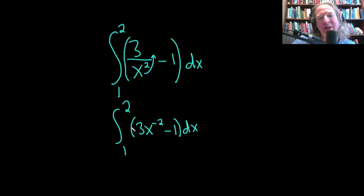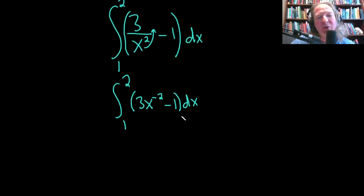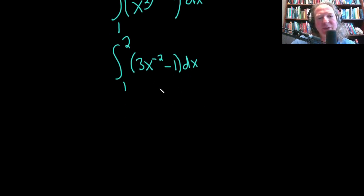And the reason we did that is so now we can apply the power rule for integration to integrate this. So when we apply the power rule, basically we add 1 to this exponent and divide by the result. So it will be equal to 3x and then 1 plus negative 2 is negative 1.